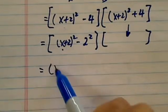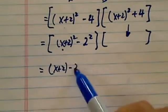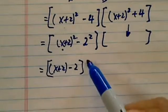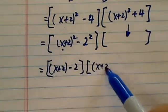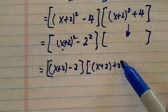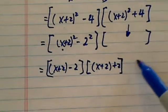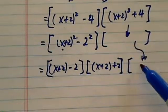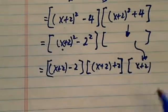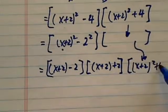And then here becomes my a, so x plus 2 is a, minus 2, times x plus 2 plus 2. And then let's copy this old one back over here, which is x plus 2 whole thing squared plus 4.